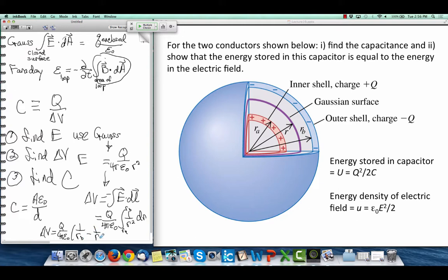1 over r sub b minus 1 over r sub a. I may be off by a minus sign. I want that to be positive. In any case, it depends on q.